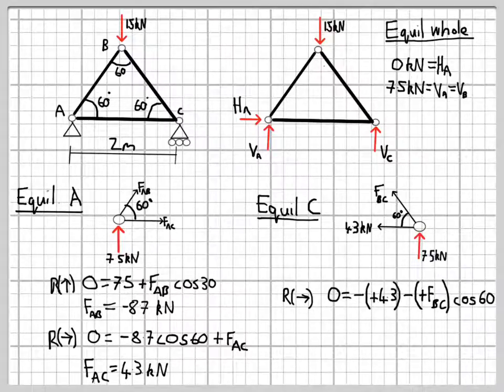Then we get an equation like this. I've written the signs here very explicitly. We've got a negative sign to indicate that the force in member AC is acting to the left, so it's in the negative x direction. And then in brackets, the positive sign because it's a tensile force. We take tensile forces as positive.